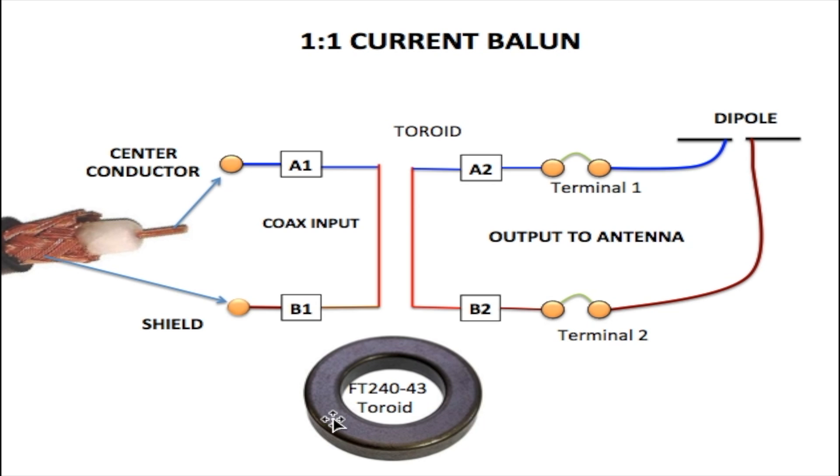Once you're winding the turns around the toroid, your output for A1 which is the middle conductor would be A2 and the output for B1 would be B2, and you just connect this to the terminal which connects to one element of your dipole.